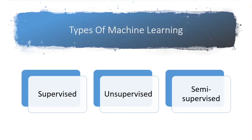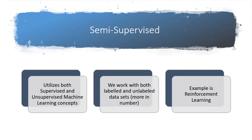Now coming to types of machine learning, we have supervised, unsupervised, and semi-supervised. The first two are already covered in a previous video — I will provide the link — and the third one we'll be discussing today. Semi-supervised, as the name suggests: break up the name and it means half supervised, half guided and half not guided. So it is a mixture of both supervised and unsupervised concepts — it works with both labeled and unlabeled data, and unlabeled data is greater in number compared to labeled data. Labeled data means we have inputs and already-known outputs; unlabeled data is that for which the output is not known.